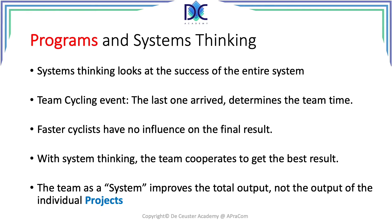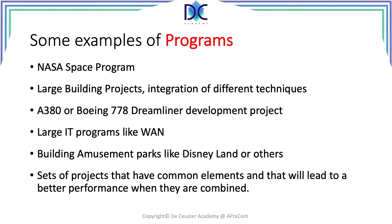The team as a system improves the total output, not the output of individual projects. The program output is the prime concern of the program manager. The program may even include some projects that are not efficient, result in a loss, or perform below standard in other parameters — but they are of key importance for the success of the program as a whole.